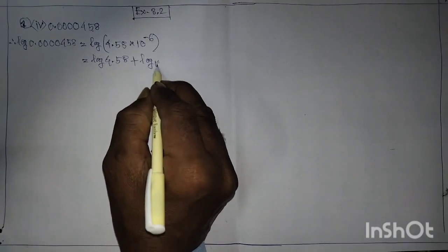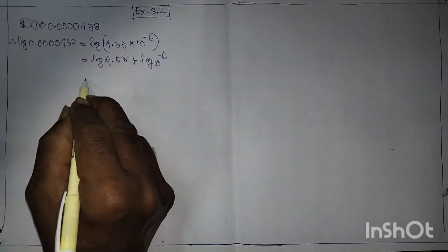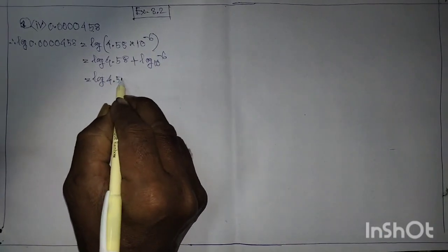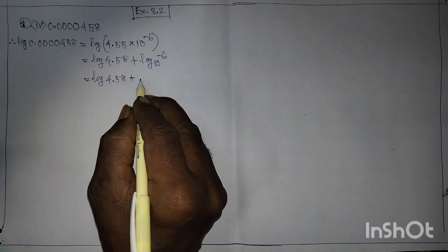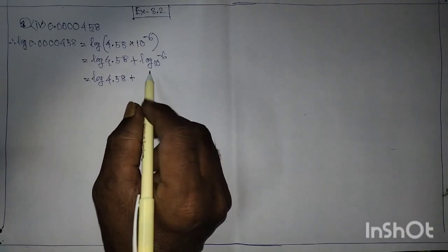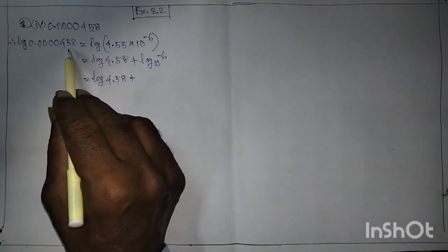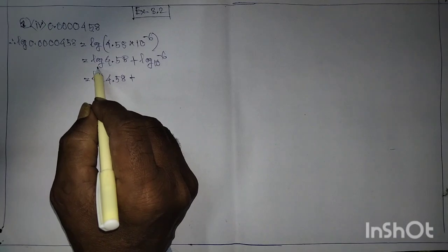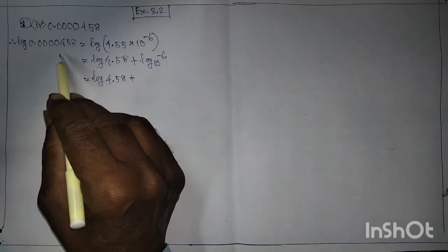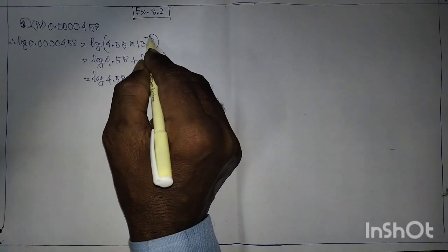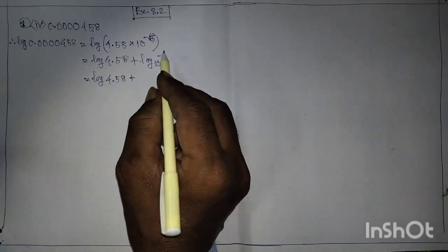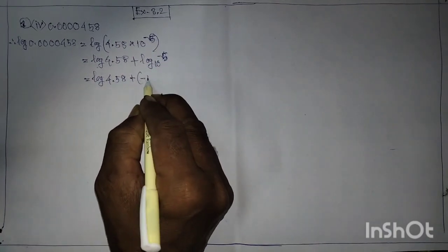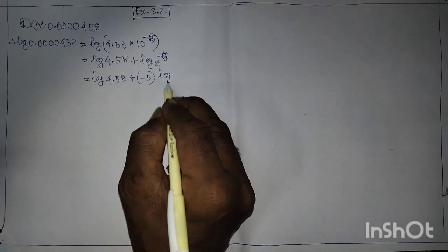Log 4.58 plus log 10^(-6). That is 0 log 4.58 plus this for 2, on the table. Oh, it is 5. It is 5. Minus 5 log 10.